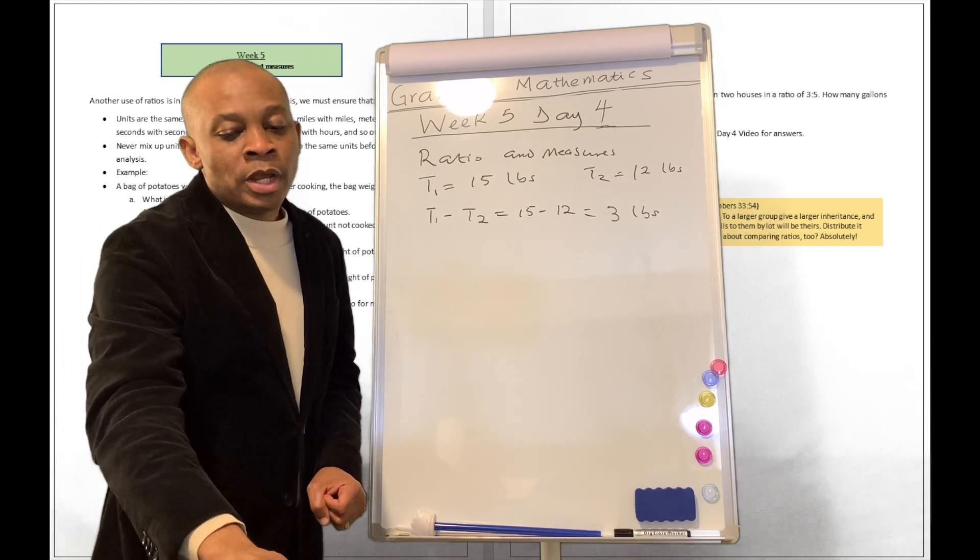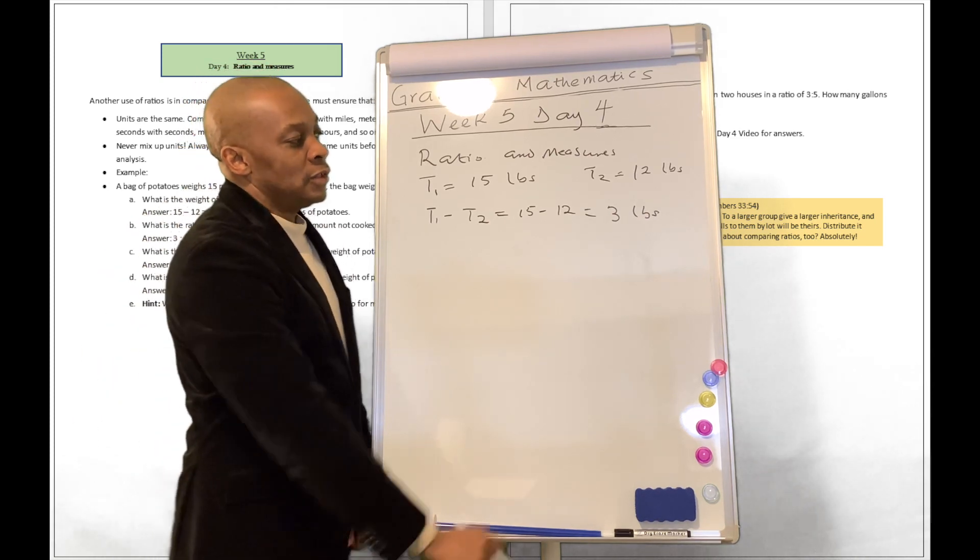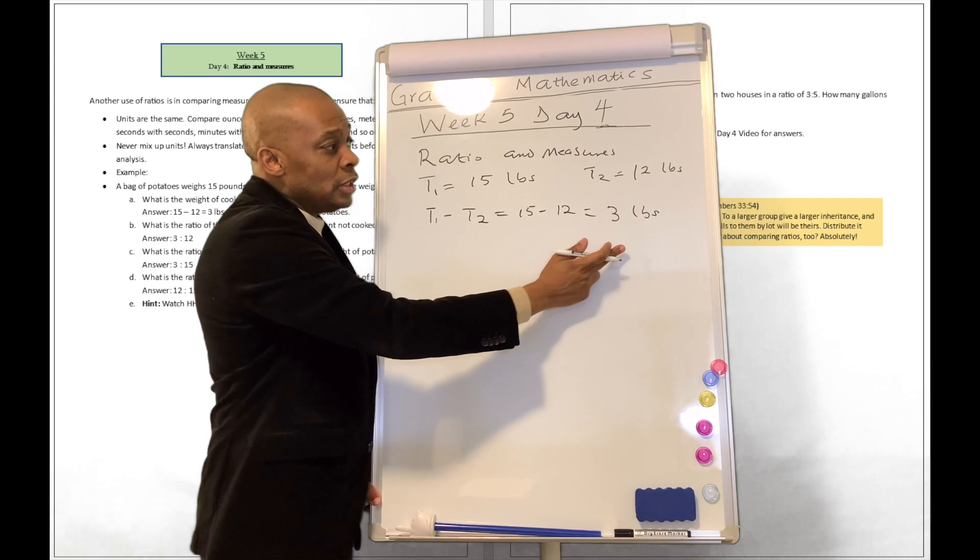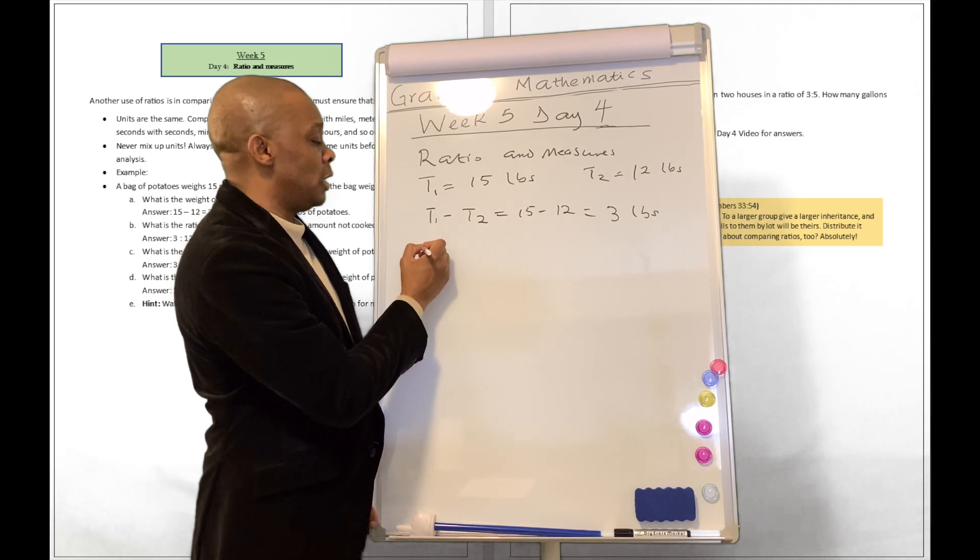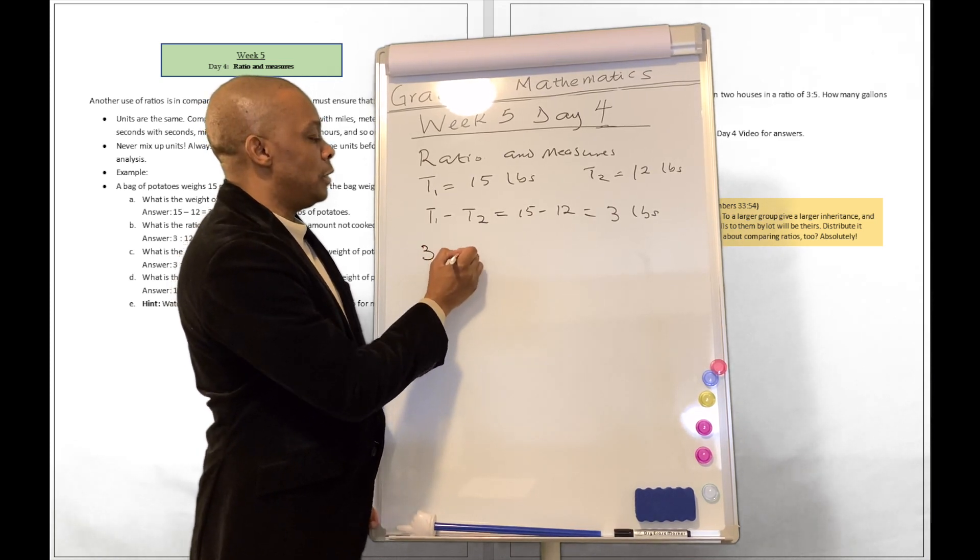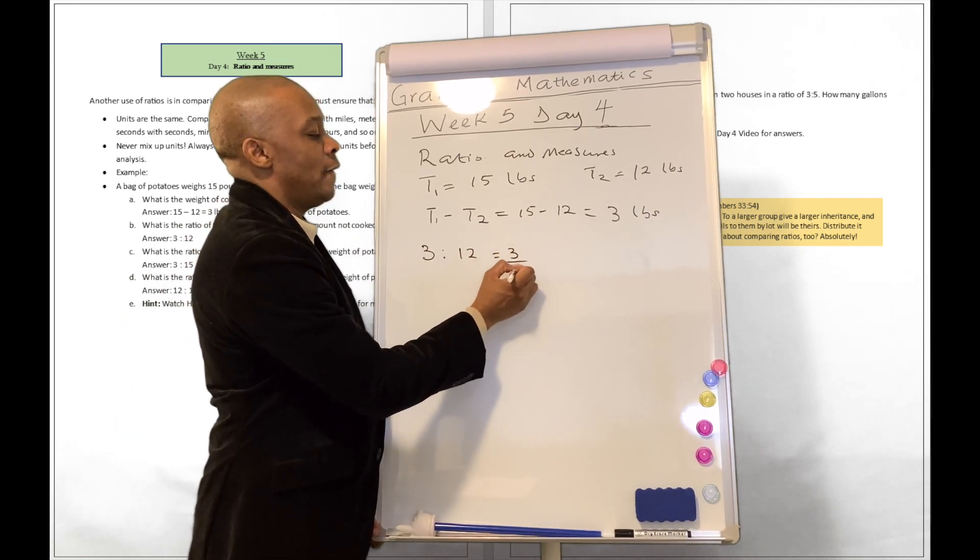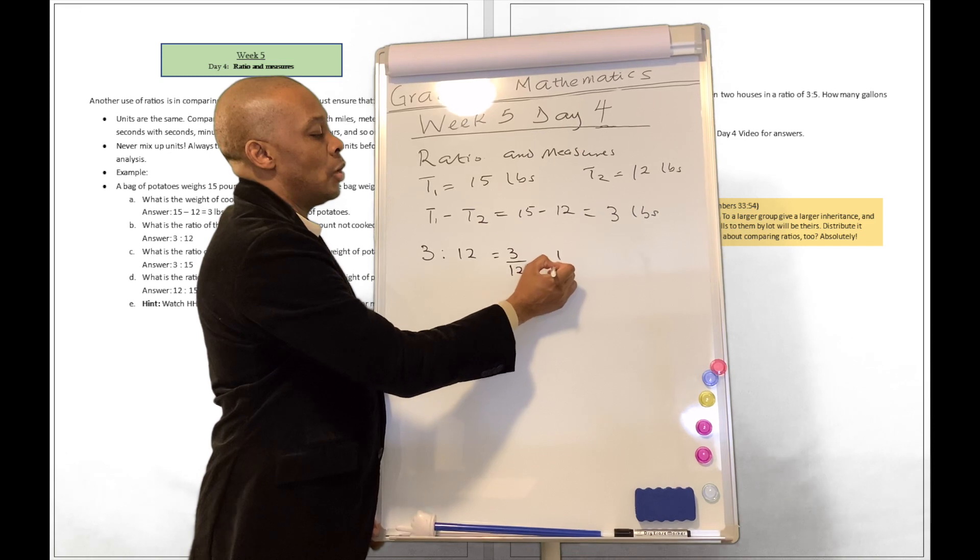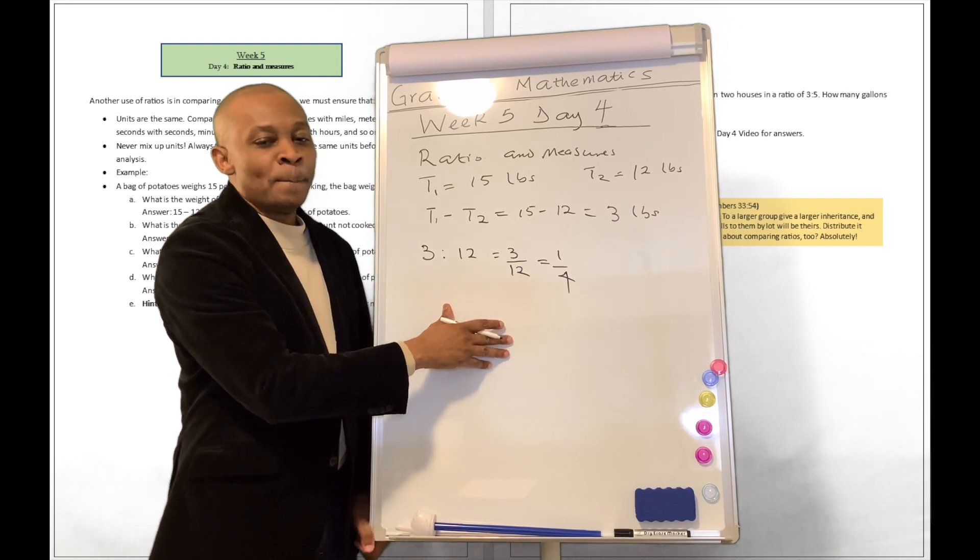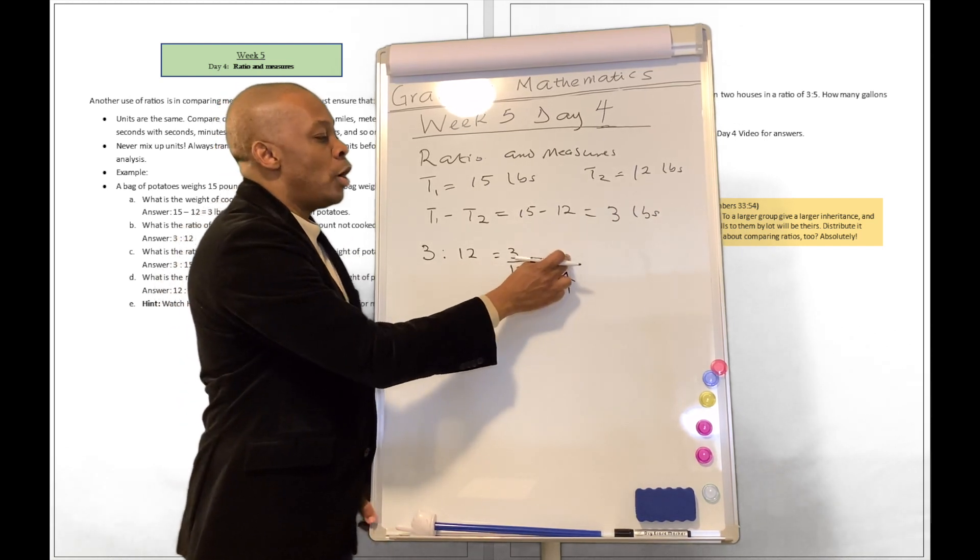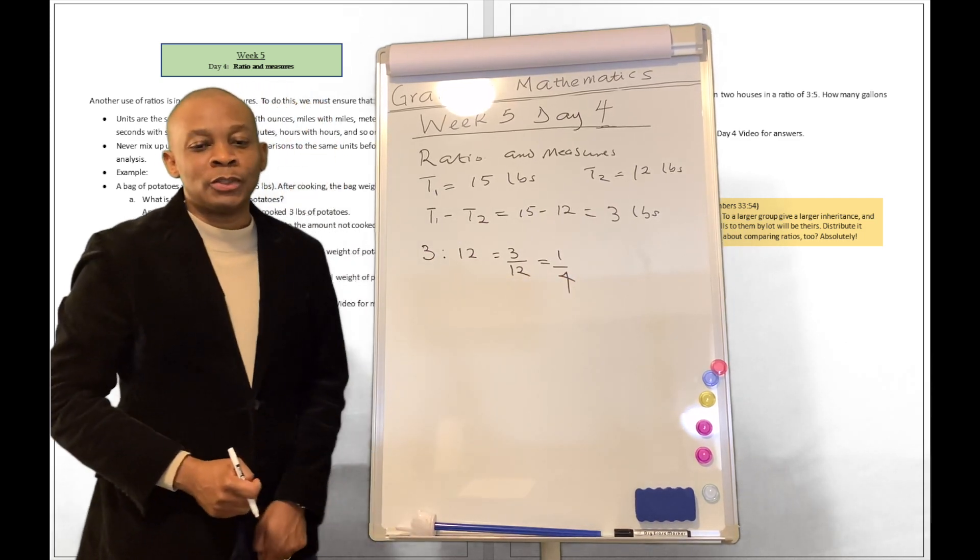Now what is the ratio of the amount cooked to the amount not cooked? So this is the amount cooked, this is the amount not cooked. The ratio of the amount cooked to the amount not cooked is going to be 3 to 12, which is equivalent to 3 divided by 12 or 1 quarter. In other words, we cooked a quarter. For every one potato that we cooked, there are 4 that are uncooked.